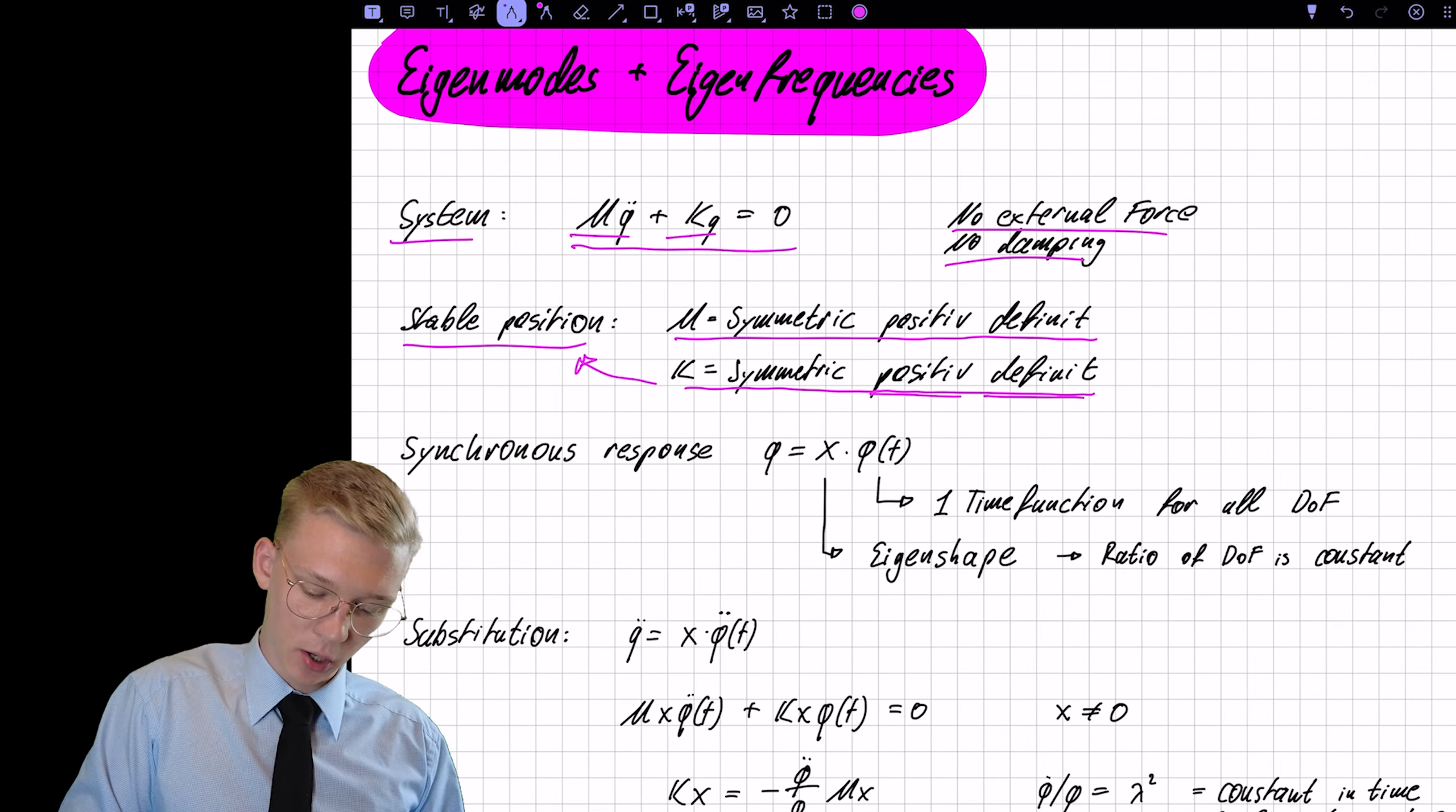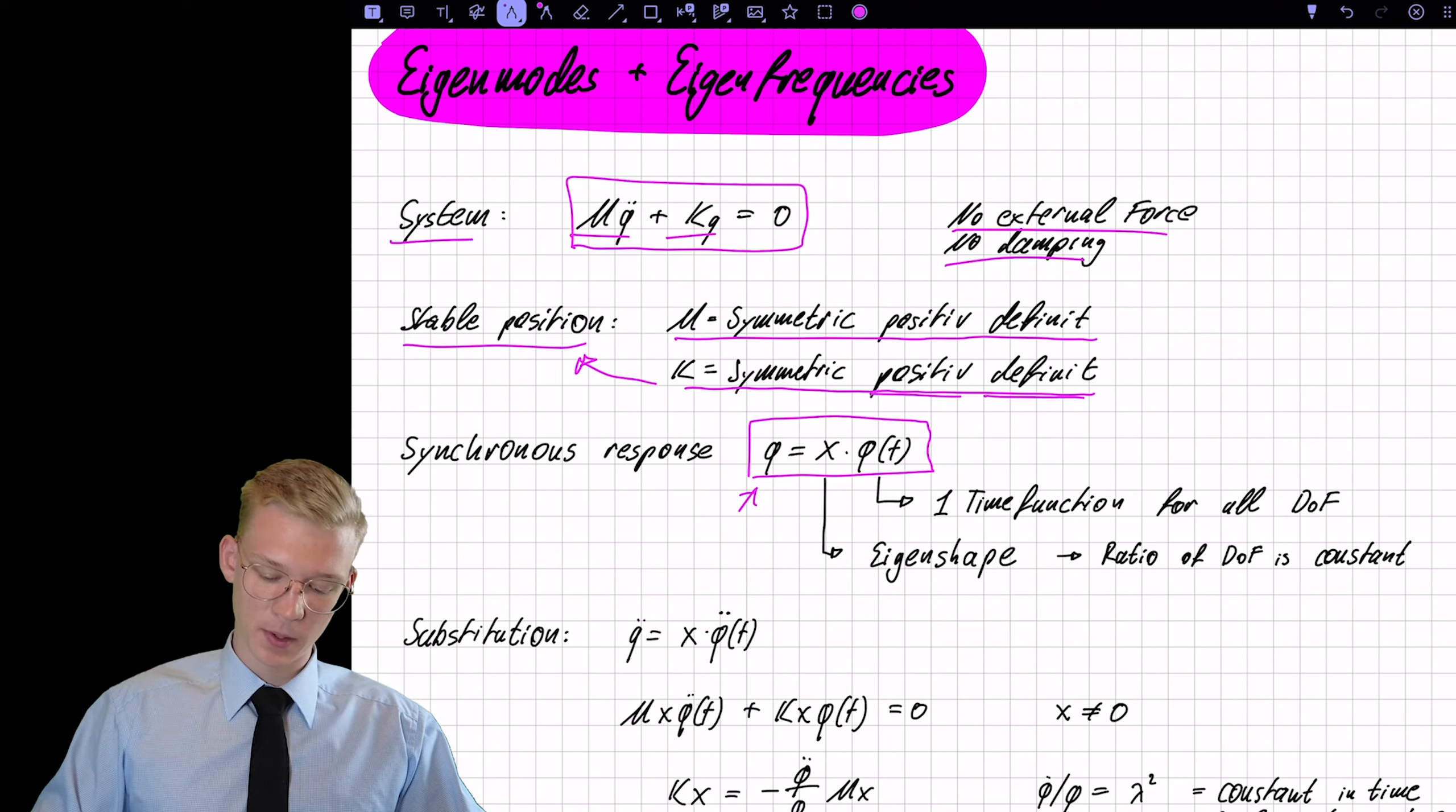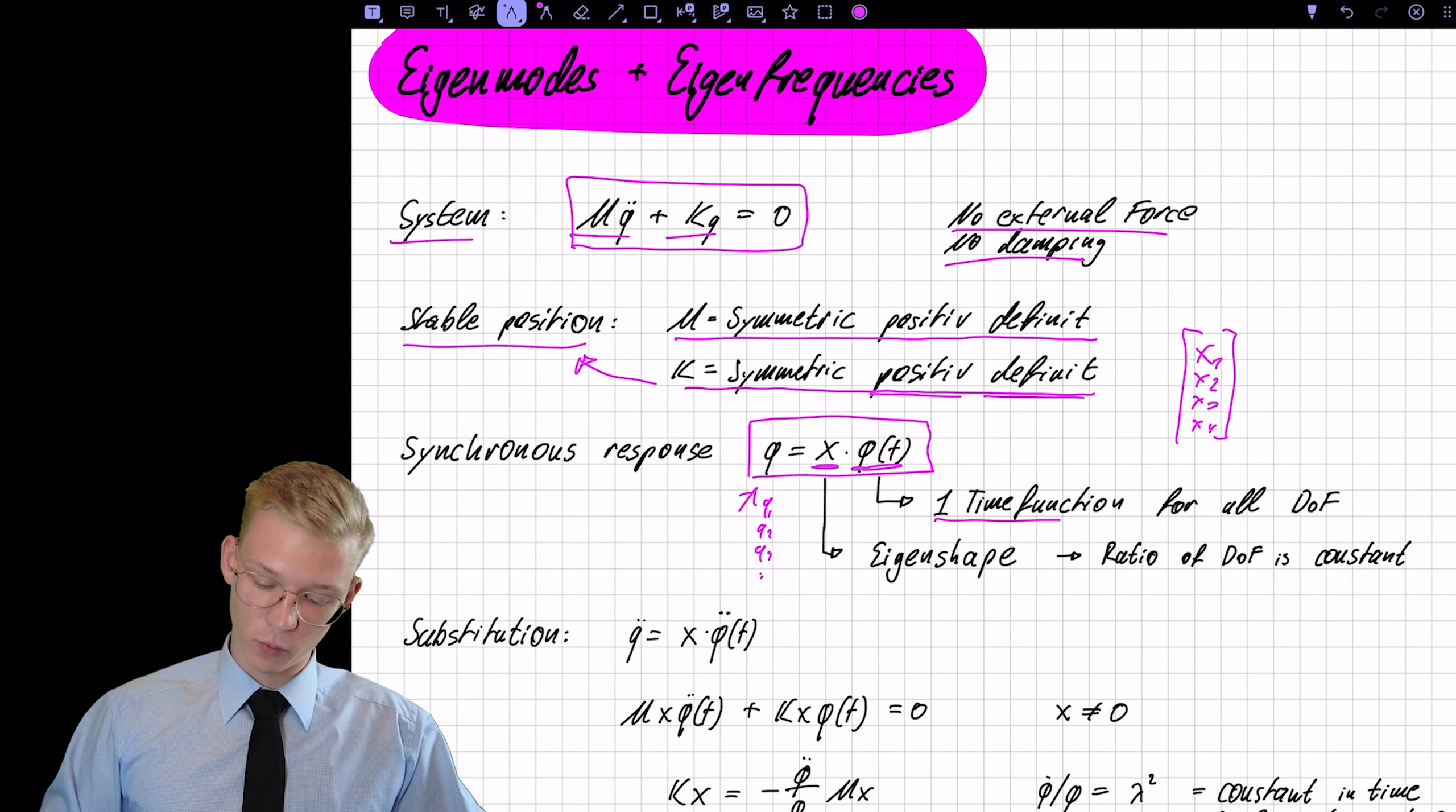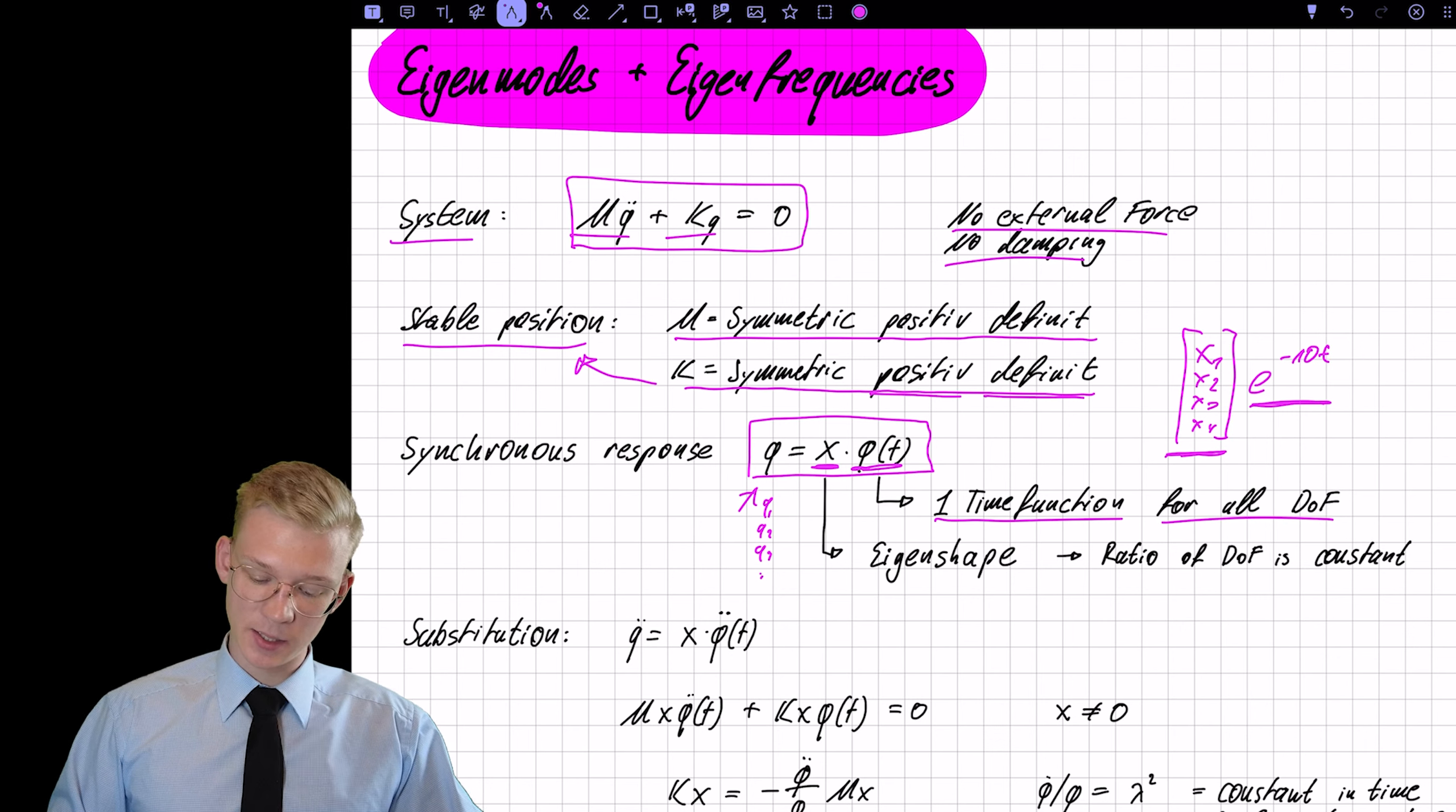Now we want to solve this system and we have to propose a solution for our Q. So we have our Q is Q1, Q2, Q3 and so forth is just a constant, a vector of constants so that is X1, X2, X3, X4 and we modulate those constants with a time function phi. So we have one time function for all degrees of freedom. For example, we have time functions e to the minus 10t.